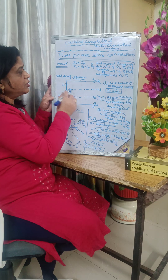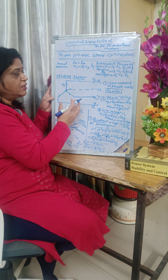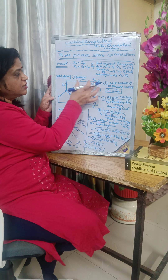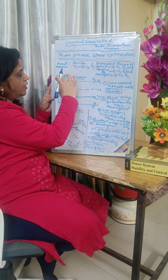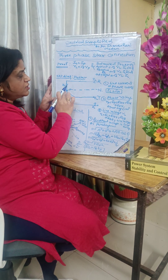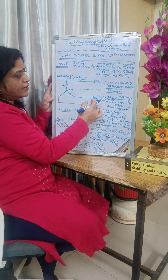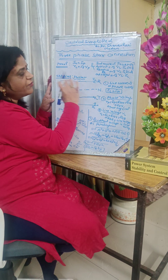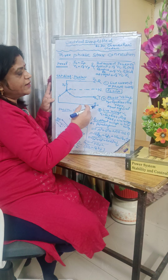First we will go through the electrical circuit diagram of the three-phase star. This is the star connection. The outer part is the line current, the inner parts are the phase parts. This is the neutral point. By observing this circuit diagram, line currents are equal to the phase currents.